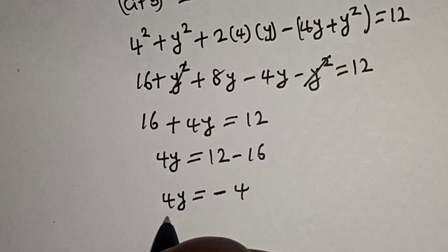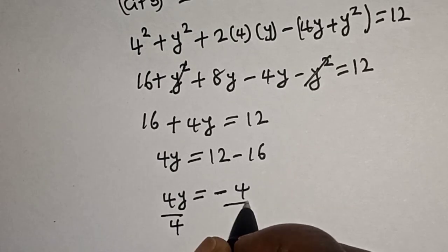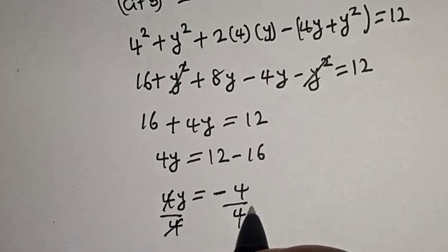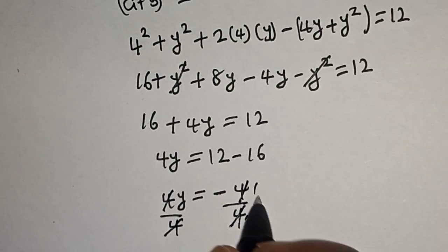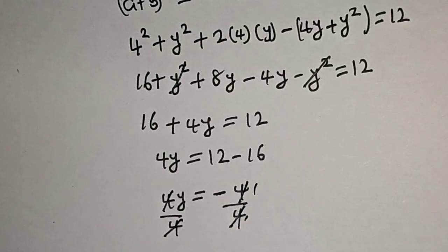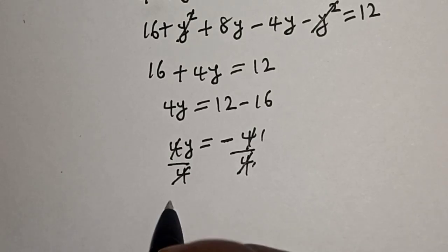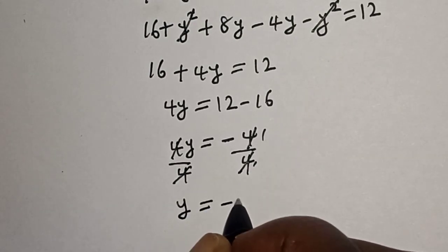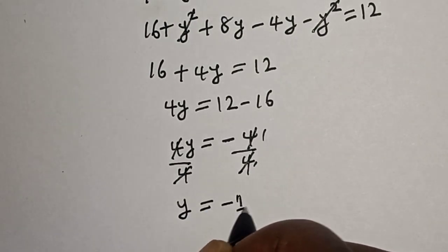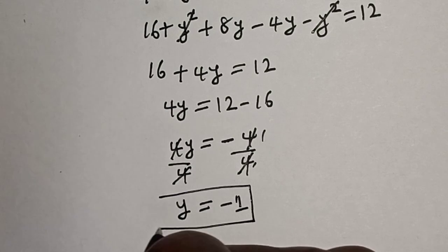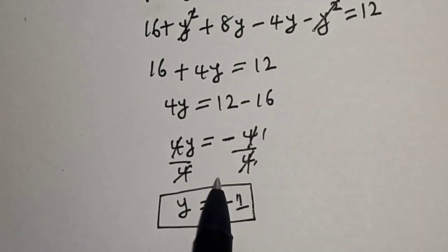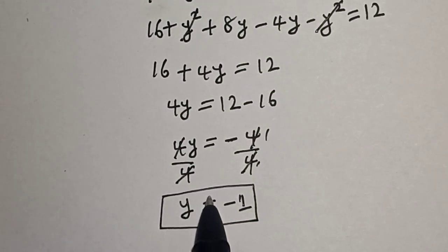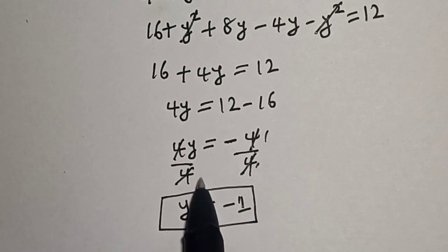Then divide both sides by 4. This cancels the 4, giving y is equal to minus 1. That is the value of y.